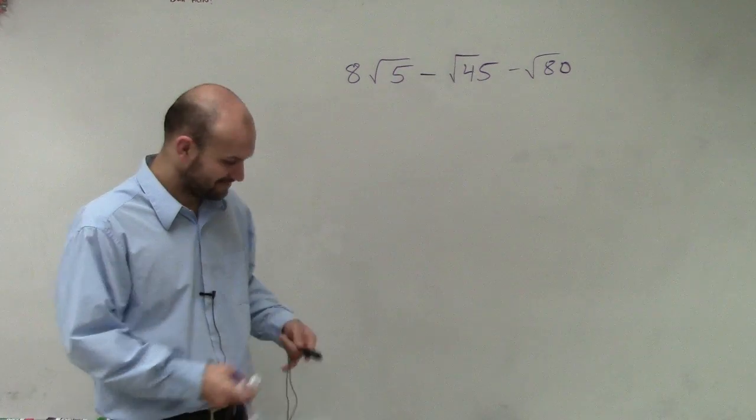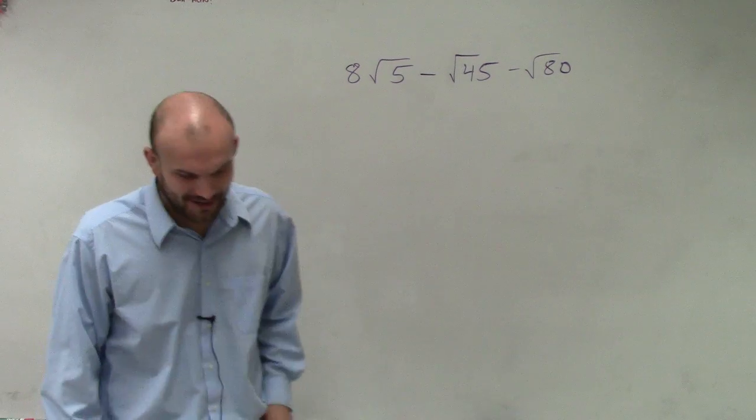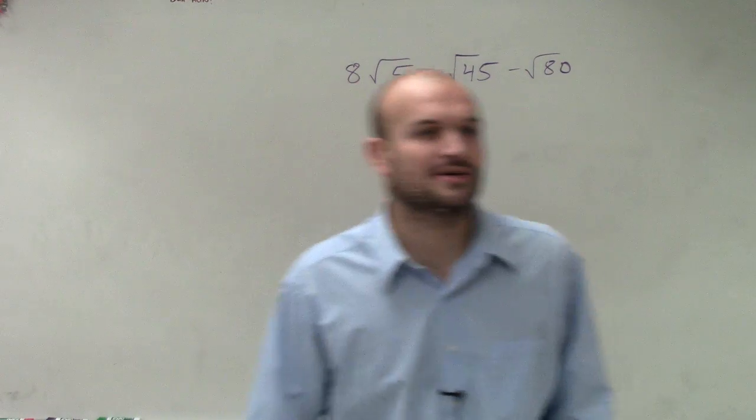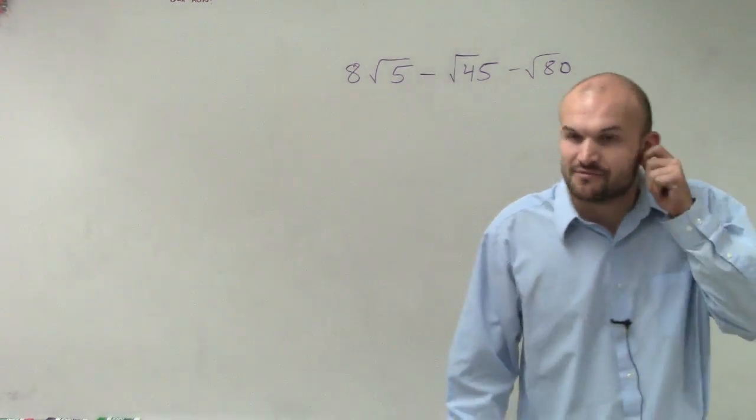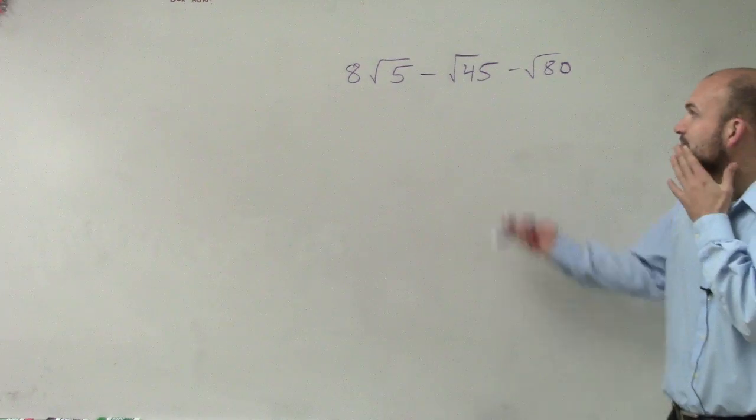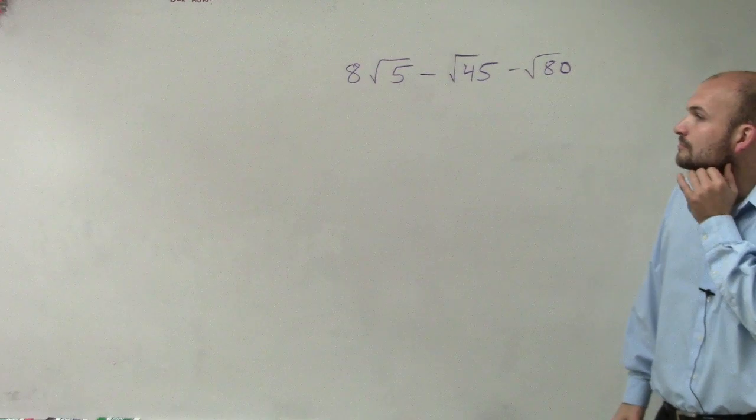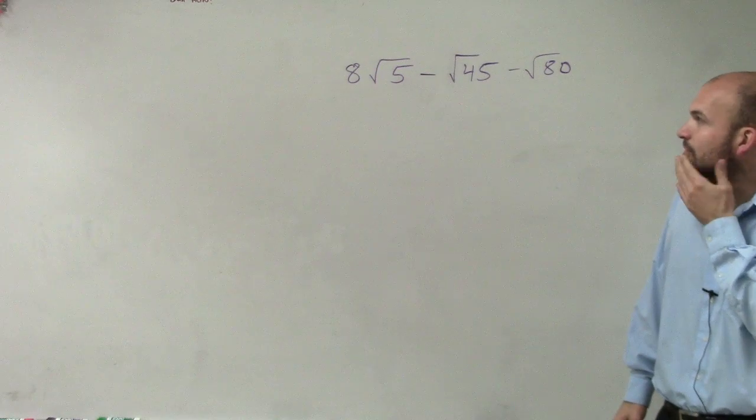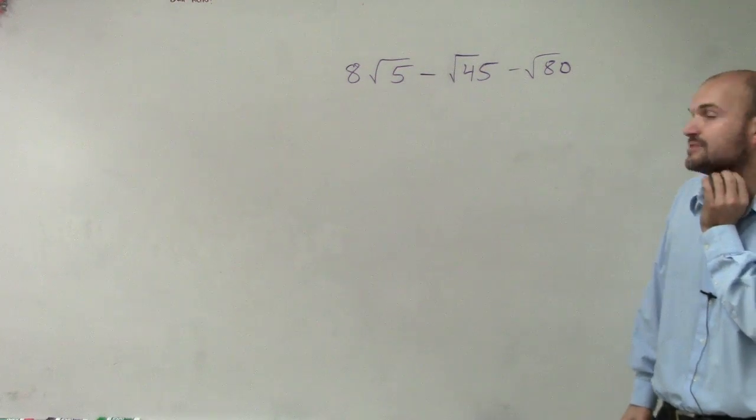Obviously, I'm not. OK. So let's go and look into adding some values here. And what we're doing is we're taking the square root of 5 plus the square root of 45 plus the square root of 80.